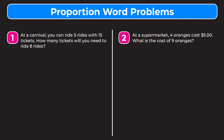When setting up a proportion, we want to create two equal ratios based on what the problem says. The problem says you can ride five rides using 15 tickets, so the ratio of rides to tickets is five over 15. We set this equal to the ratio in the second part: eight rides over x tickets, where x is the number of tickets needed to ride eight rides.